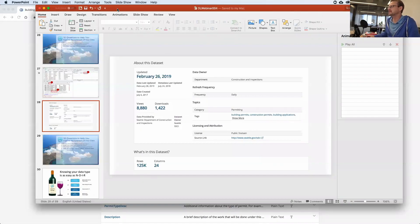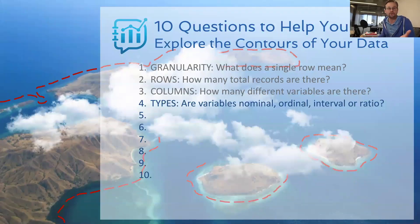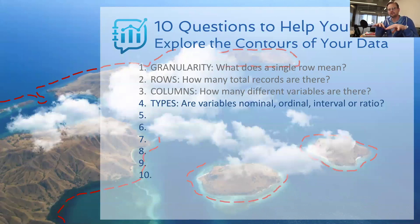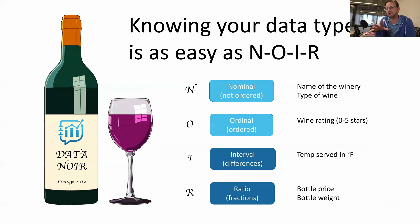This next one is kind of a fun one — it's really about the type of data. Not all data types and variables are the same. Looking at the 24 variables in the building permits case — what are they? There are four different types of variables to think about, each with multiple subtypes. At a high level, it's really qualitative or quantitative: is it numerical, can I map it on a continuous axis, or is it something I would use to group? The way to remember the data types is to think about it like wine — I call it data noir. The word NOIR gives you the four types.